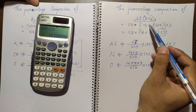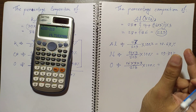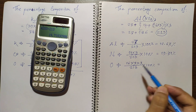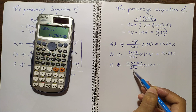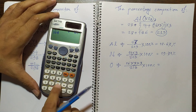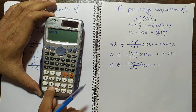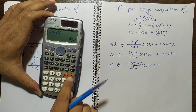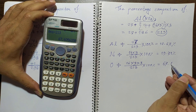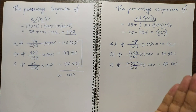For oxygen in aluminium nitrate, there are 3 atoms in the NO₃ group times 3 groups, giving 9 oxygen atoms total. So the percentage composition of oxygen is 16 × 9 = 144, times 100, over 213, which equals 67.60%.